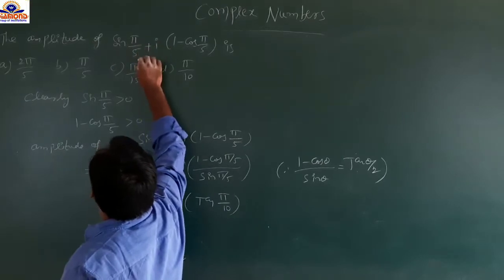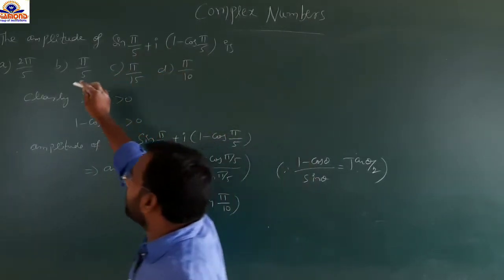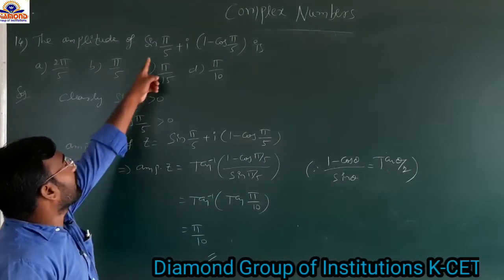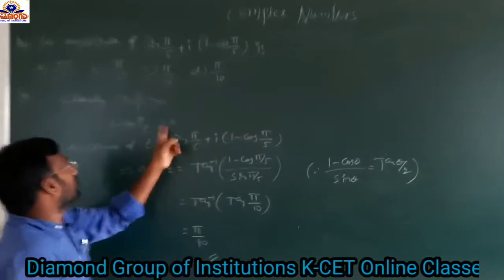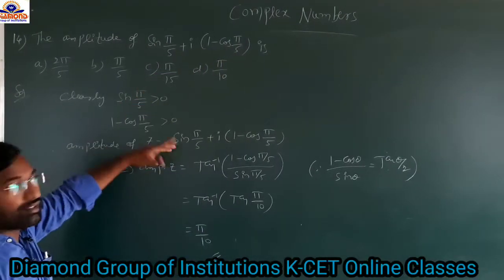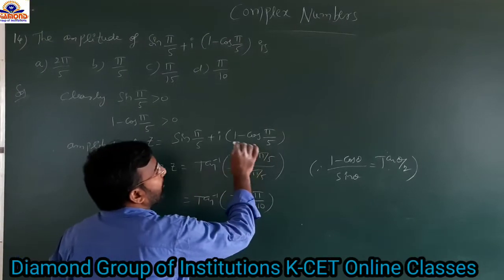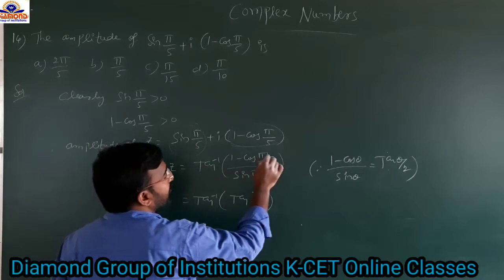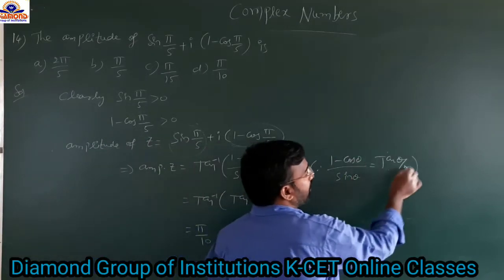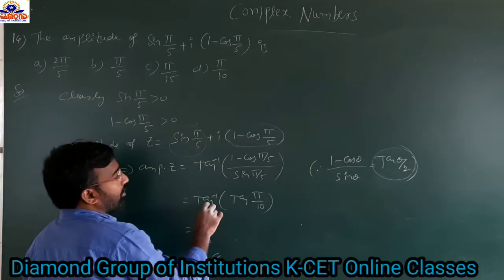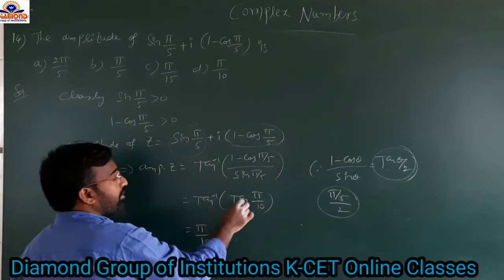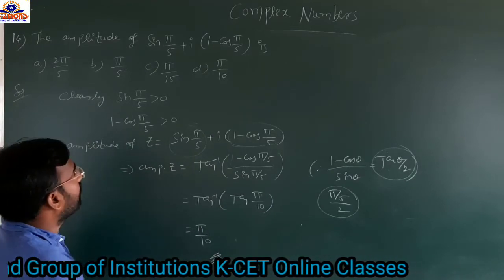The amplitude of sin(π/5) plus i·(1 minus cos(π/5)) is: option a) 2π/5, option b) π/5, option c) π/15, option d) π/10. Since sin(π/5)>0 and 1−cos(π/5)>0, amplitude equals tan⁻¹(imaginary/real) equals tan⁻¹((1−cosθ)/sinθ) with θ equals π/5. Using the identity (1−cosθ)/sinθ equals tan(θ/2), we get tan⁻¹(tan(π/10)) equals π/10. So option is D.